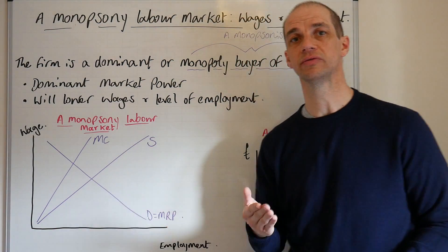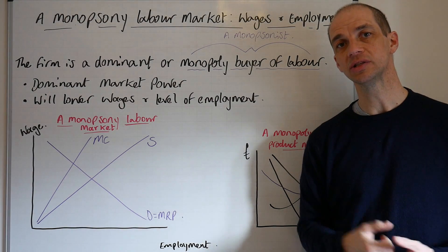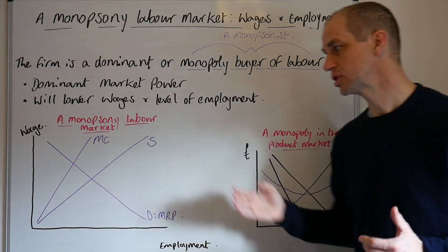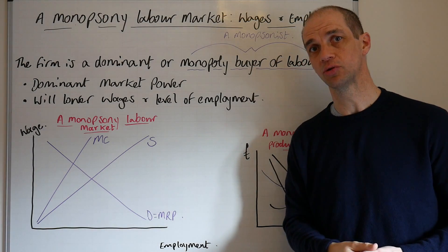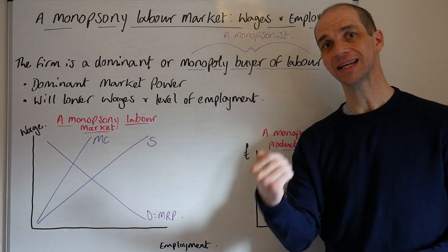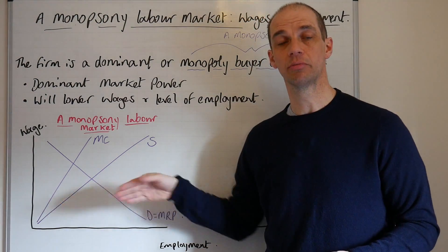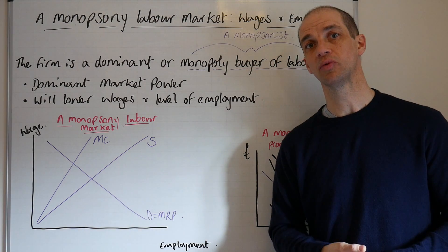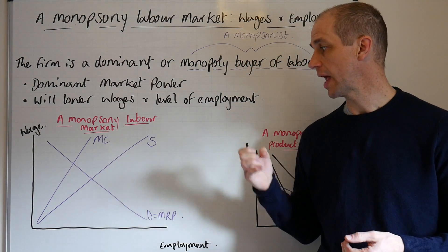For the supply curve, we've got an upward-sloping supply curve as we've seen before. But remember that we've got a deviation between the marginal cost and the supply curve — we didn't see this in perfectly competitive labour markets, where the marginal cost equals the supply for a given firm. The reason is that to attract more workers to a given industry, you need to offer higher and higher wages. As you offer higher wages to that marginal employee, you need to offer higher wages to everyone, so the marginal cost of employing that next employee will be greater. Marginal cost is always greater than the supply curve.